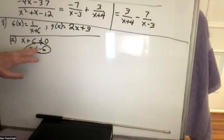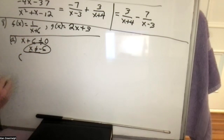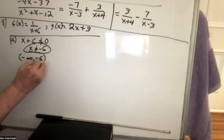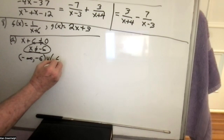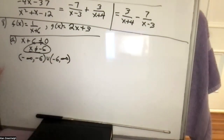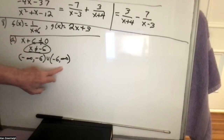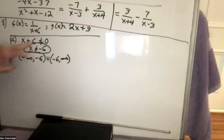Some people just left it like that — I gave full credit, even though I expected interval notation. Get used to this, because when you get to calculus, they won't accept just x not equal to negative 6. Interval notation is the answer they'll expect.